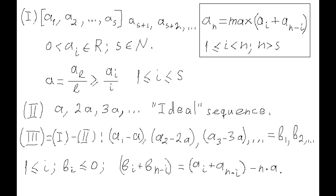This will prove the statement of this problem — that winners always exist. To do this, we associate our first sequence a_1, a_2, etc. with the ideal sequence whose members are a, 2a, 3a, etc. We then define a third sequence whose members are the members of the first sequence minus the corresponding members of the second sequence. We call the members of this third sequence b_1, b_2, etc.